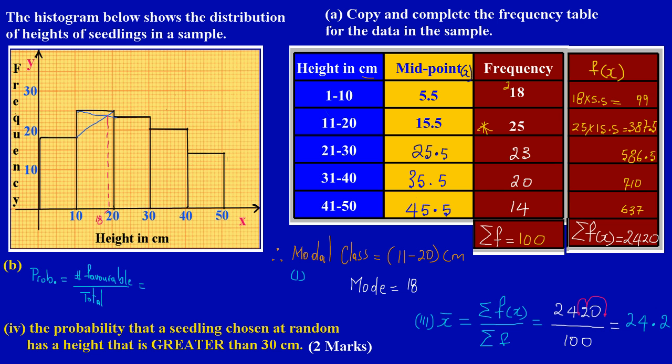Here I would have my number of favorable outcomes: 20 plus 14 over the total, and we had found the total already to be 100. So we're putting all of that over 100. So really what that works out to be, 20 plus 14 gives us 34 over 100.